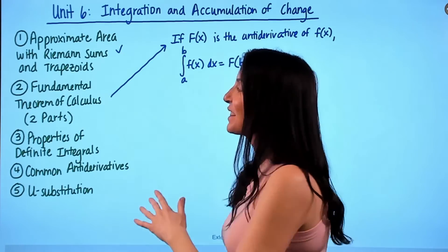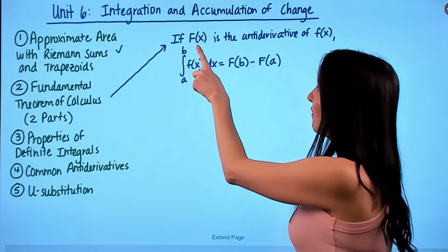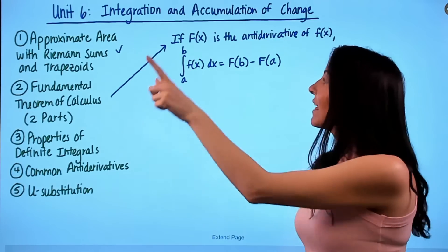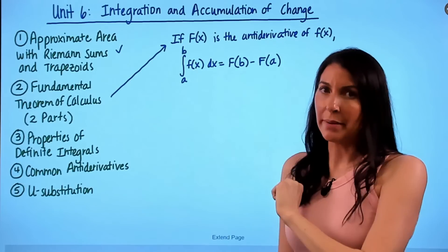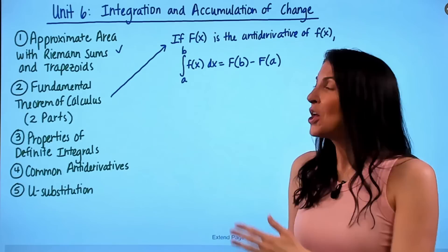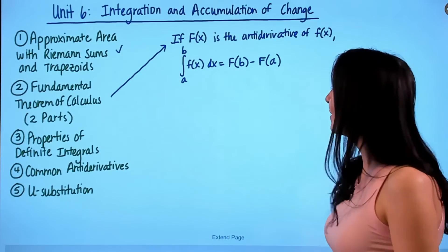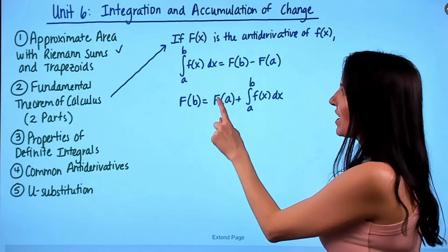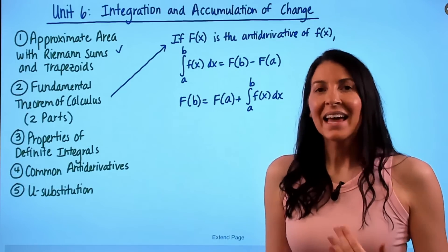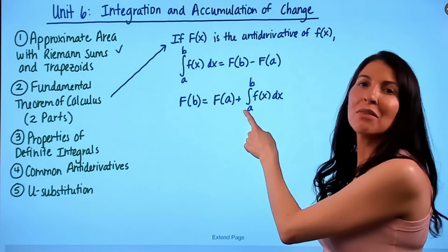Now let's move on to the Fundamental Theorem of Calculus, which has two parts. The first part states: if F(x) is the antiderivative of f(x), then the integral from a to b of f(x) dx equals F(b) minus F(a). With slight manipulation, this gives F(b) = F(a) + the integral from a to b of f(x) dx — sometimes called the Net Change Theorem. This is helpful when you want to find a final amount by taking the initial amount and adding the accumulated change.